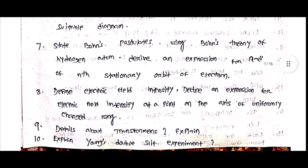Deduce an expression for electric field intensity at a point on the axis of a uniformly charged ring. Also, explain the details about a transformer — explain step-up and step-down transformers, with diagram and definition.